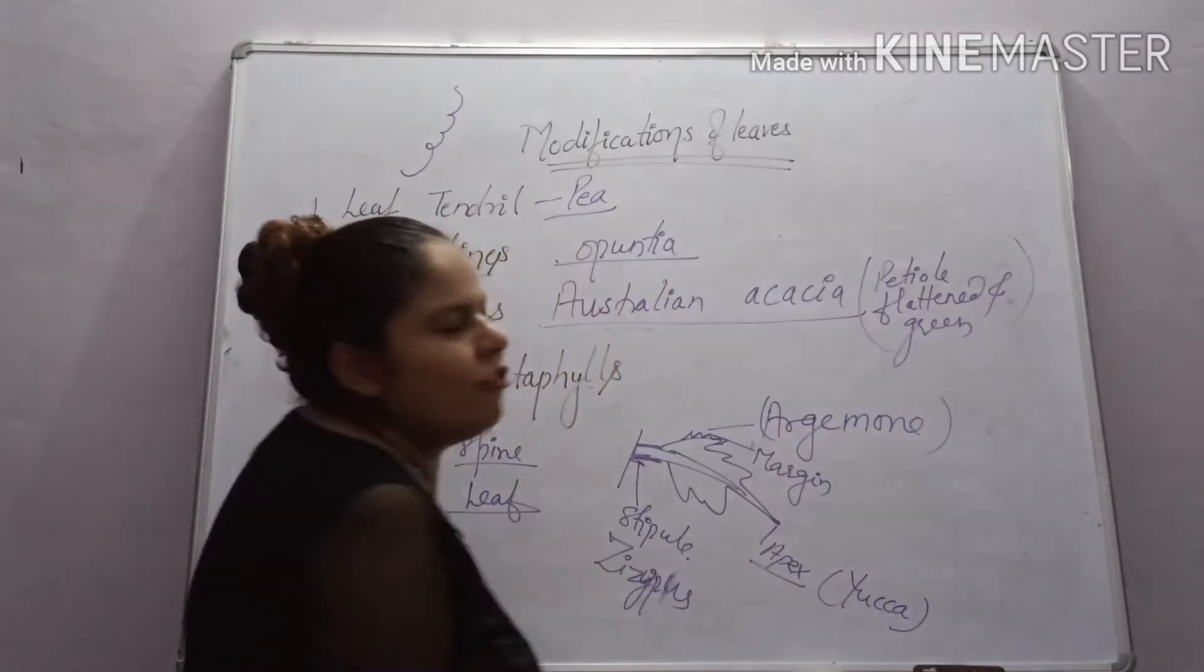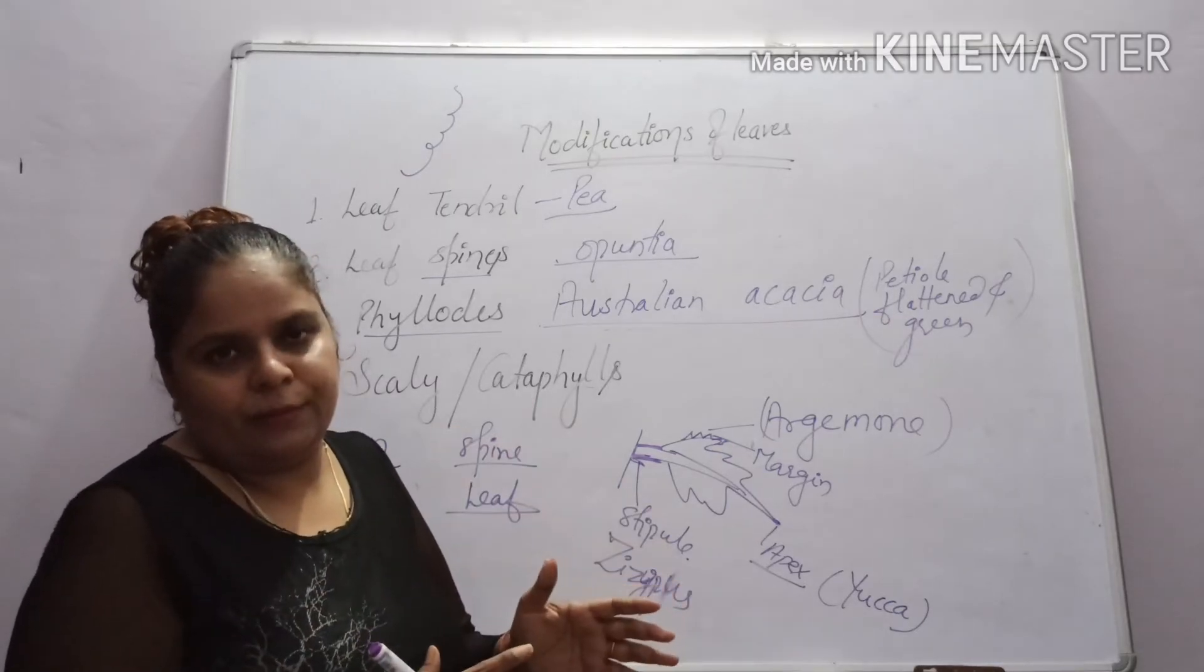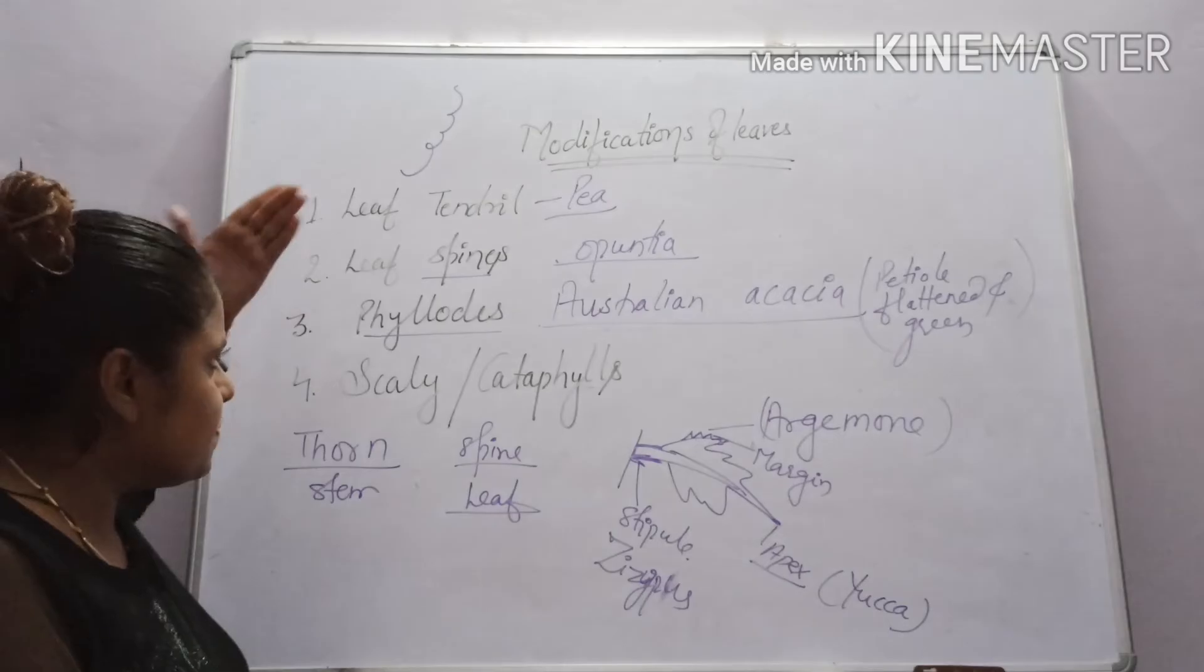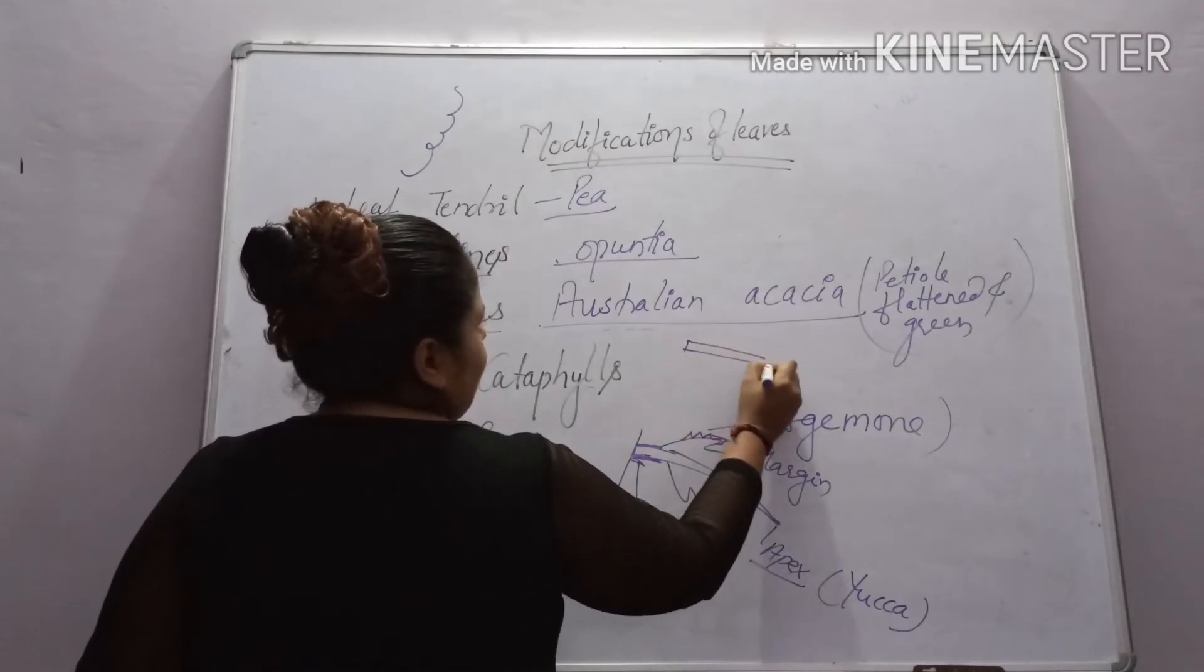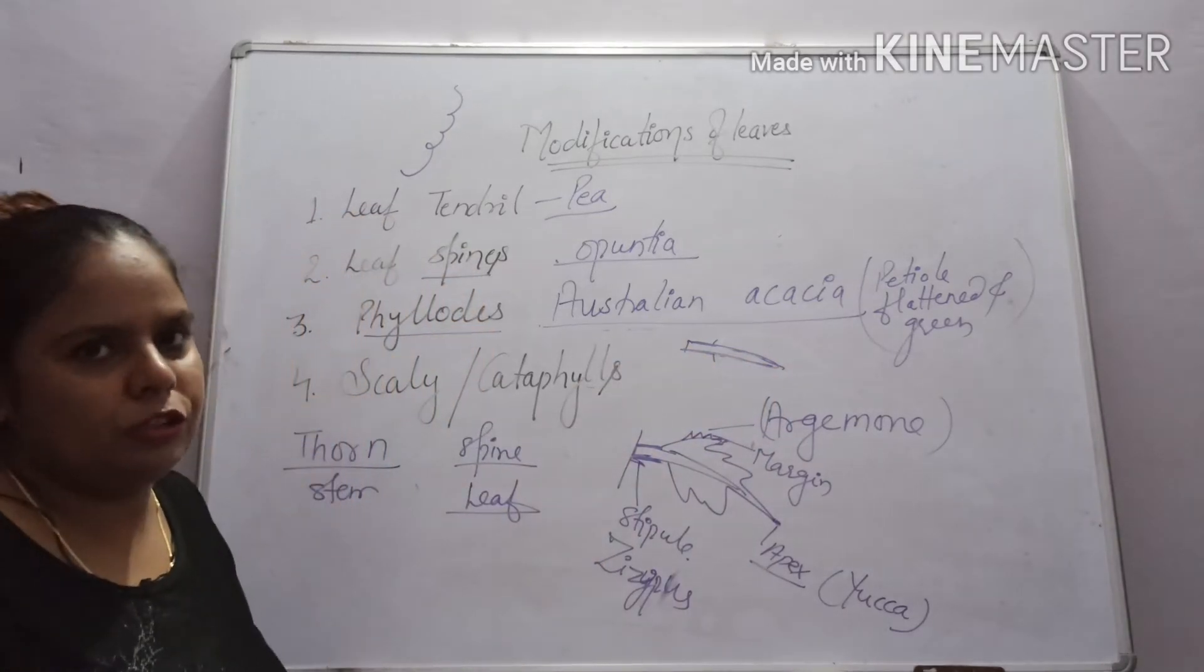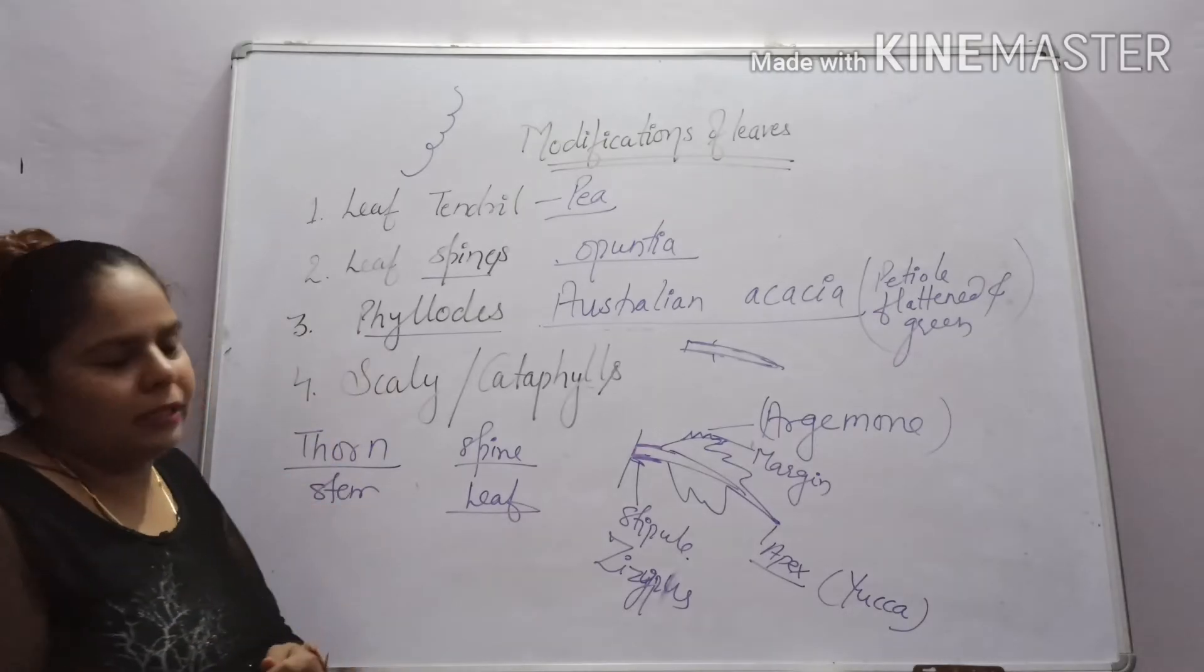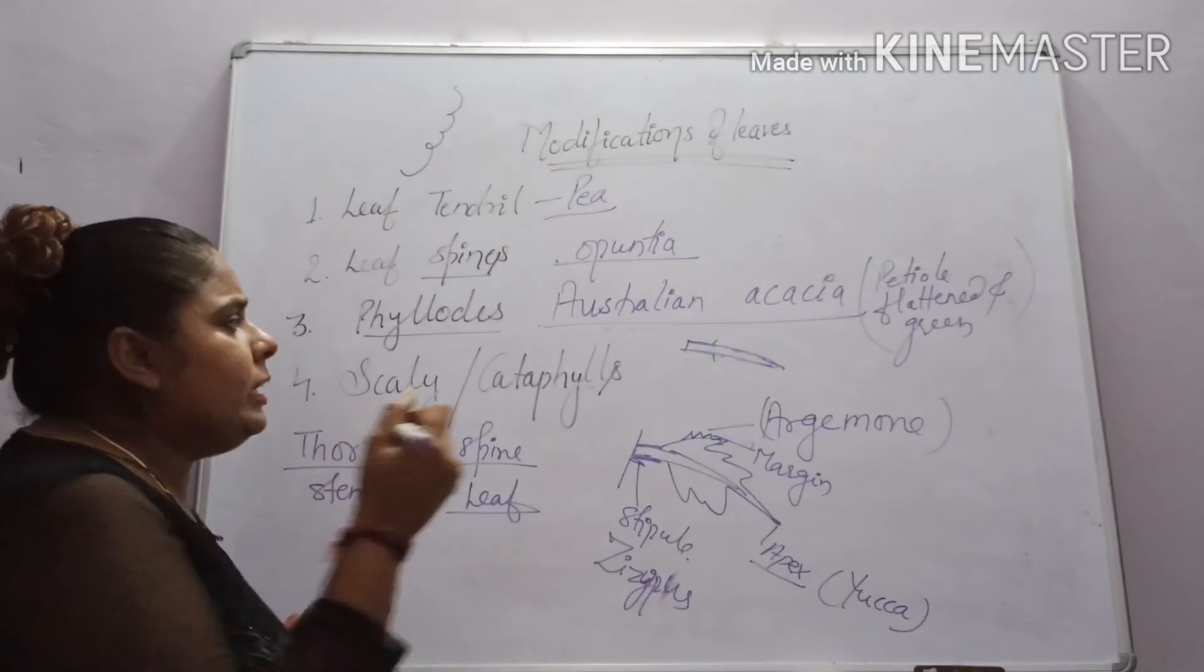In this case, the petiole will be flattened and green and perform the function of photosynthesis. Why? Where is the leaf? The leaf was at seedling time, but the leaf is shed to check the rate of transpiration. In this case, the leaf is not changed into spine.